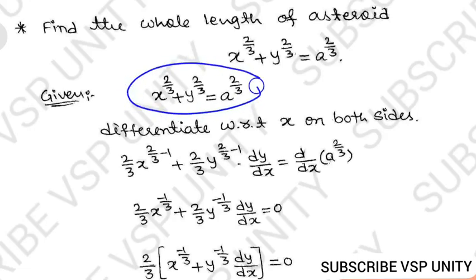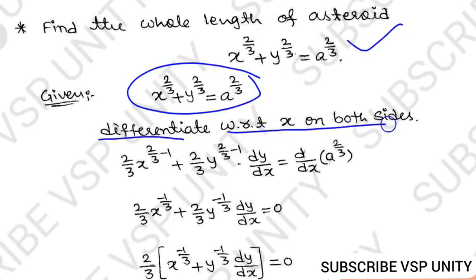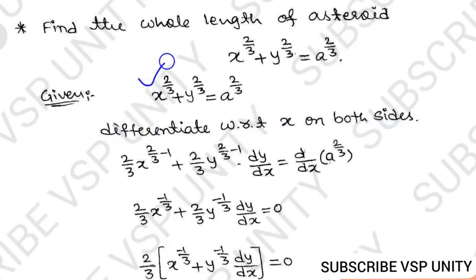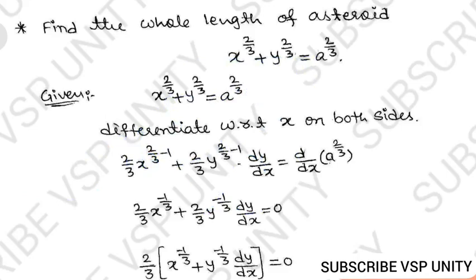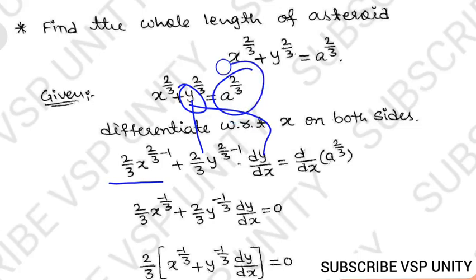First, differentiate the given asteroid equation with respect to x on both sides. Using the rule that the differentiation of x^n is n·x^(n−1), we get: (2/3)x^(2/3−1) + (2/3)y^(2/3−1)·(dy/dx) = 0.